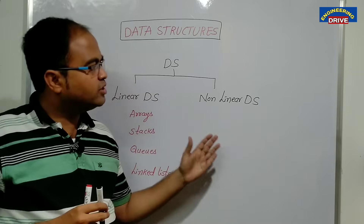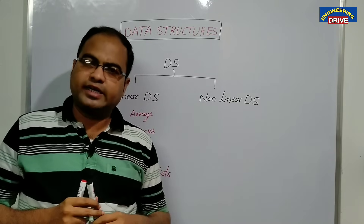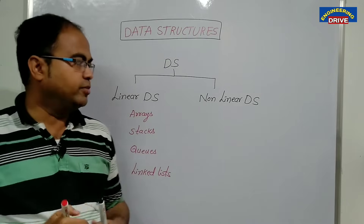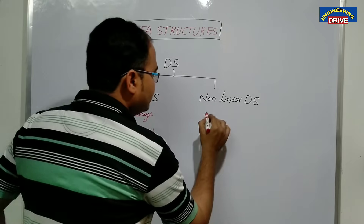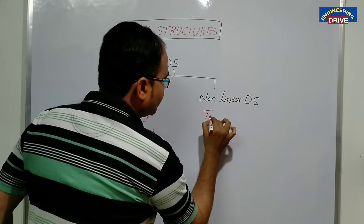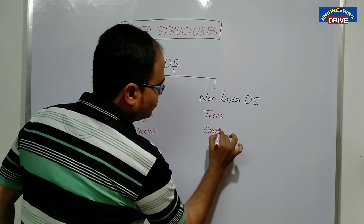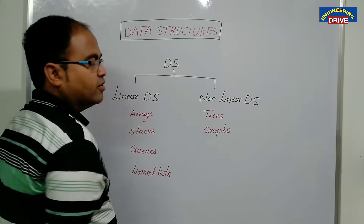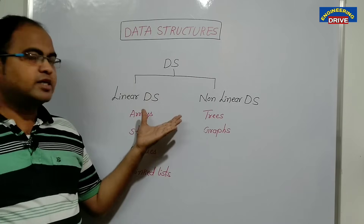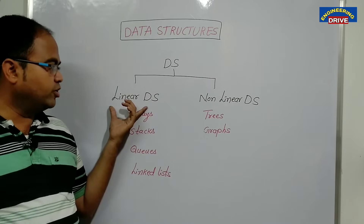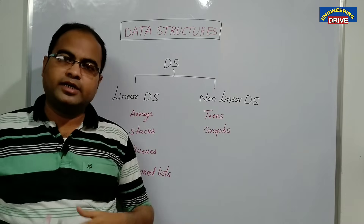Whereas our computer also makes use of another set of data structures where data will be stored differently. We call them non-linear data structures — these include trees and graphs. In my next videos, I will be preparing a separate set of videos for linear data structures and a separate set for non-linear data structures.